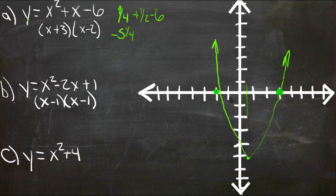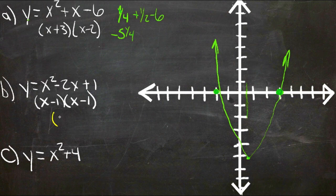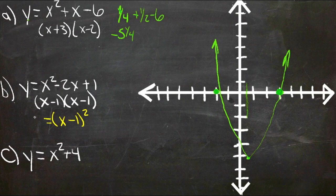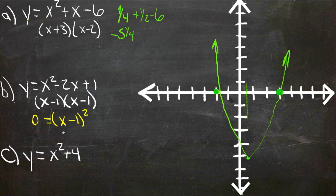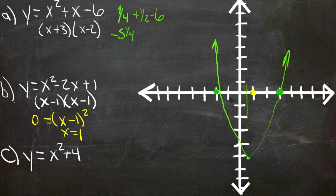The second one, if we factor this out, we get (x minus 1) times (x minus 1), or if you like, (x minus 1) quantity squared. Remember in order to find the x-intercepts, we have to solve for y equals 0. Well the only solution that makes this equal to 0 is x equals 1. Which means this one only has a single intercept right here.